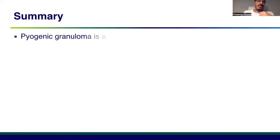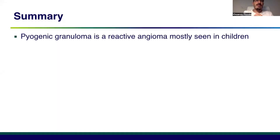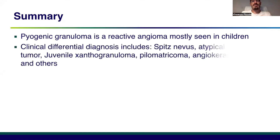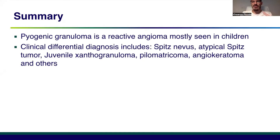To conclude, pyogenic granuloma is a very common form of reactive angioma, mostly seen in children, often presenting as a papule or nodule. Red-colored face, chest, and limbs are the most common sites. Clinical differential diagnosis, although it can be easy, sometimes includes amelanotic melanocytic tumors such as Spitz nevi and atypical Spitz tumors.